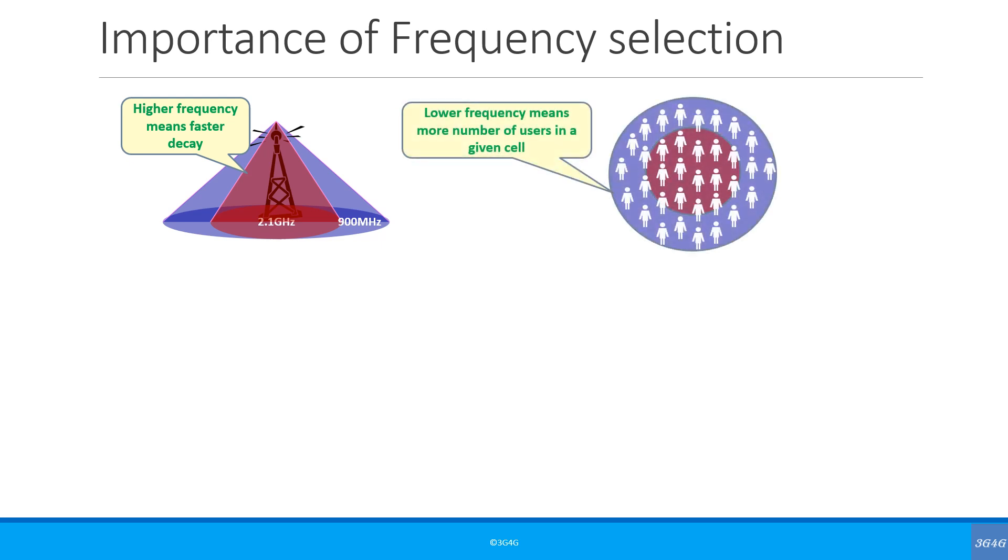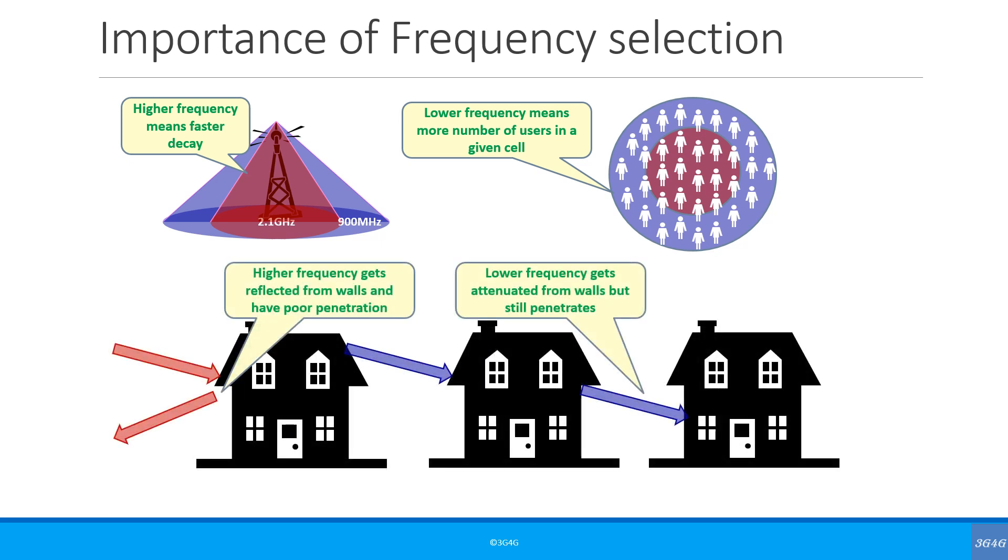Similarly, low frequency means larger cell size, hence a greater number of users. This means that each user will generally have lower throughput as there are more users in the cell. Finally, higher frequency gets reflected from walls and has poor penetration, while lower frequency gets attenuated but still penetrates. This is probably the most important point to remember as we want 5G to reach indoors as well as outdoors.